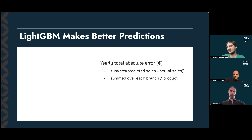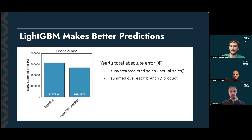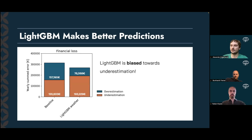Finally, we calculated the yearly prediction error in euros to examine forecasting performance on a financial scale. We calculated the absolute differences between actual sales and model predictions, summed those individual errors across the whole year, and then summed across all branch-product combinations. We found that LightGBM reduced the yearly summed error from about 310,000 to about 270,000 euros compared to baseline. Interestingly, about 70 percent of the yearly summed error produced by the LightGBM model was due to underestimating sales, meaning our model currently shows a pronounced bias towards underestimating actual sales.